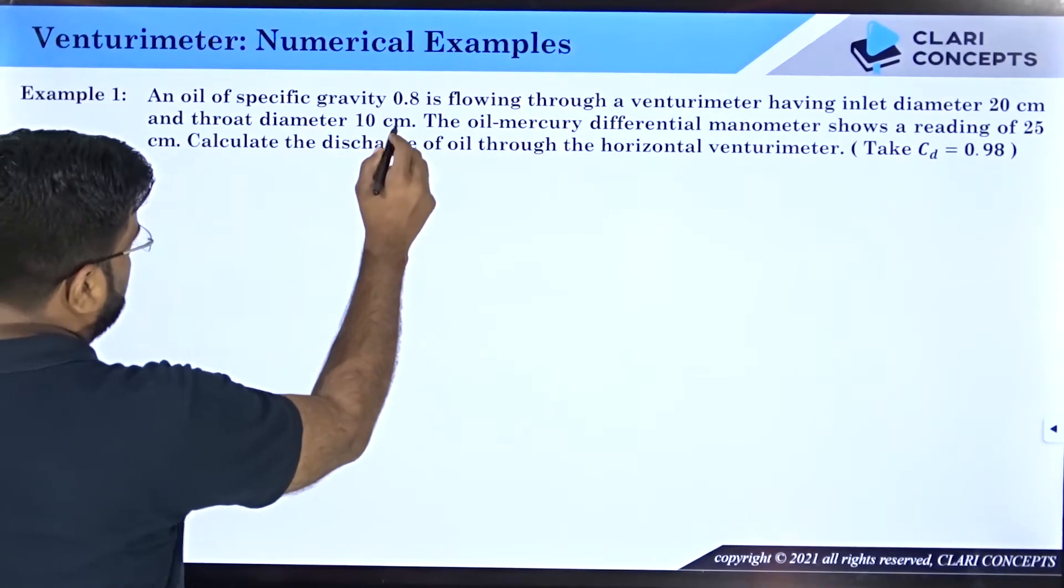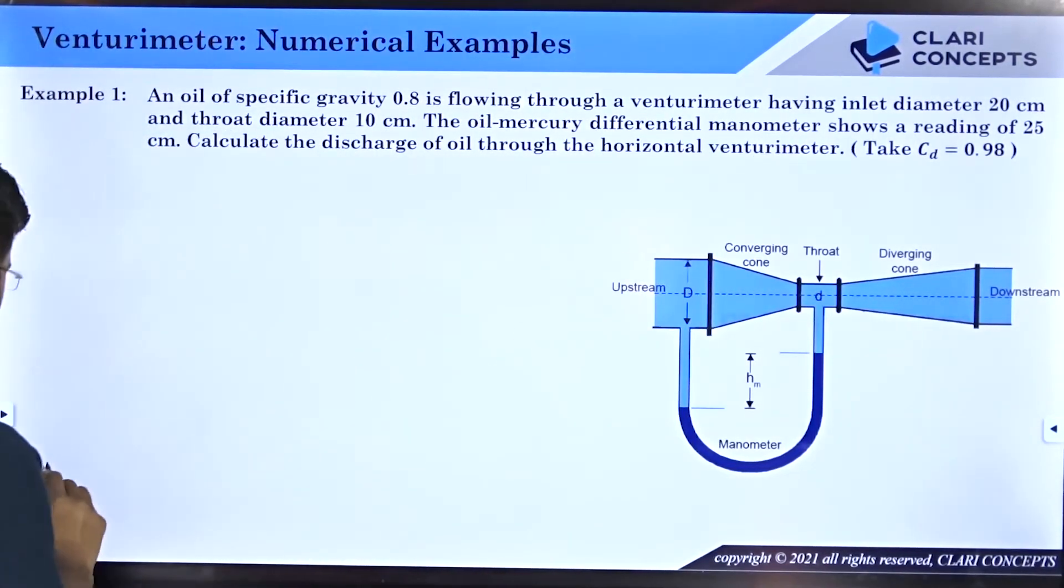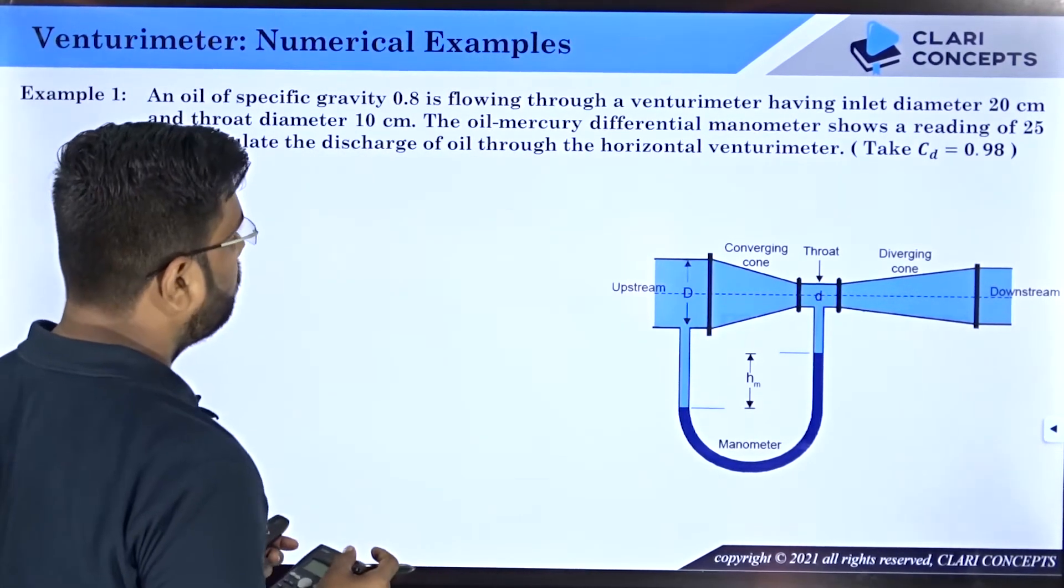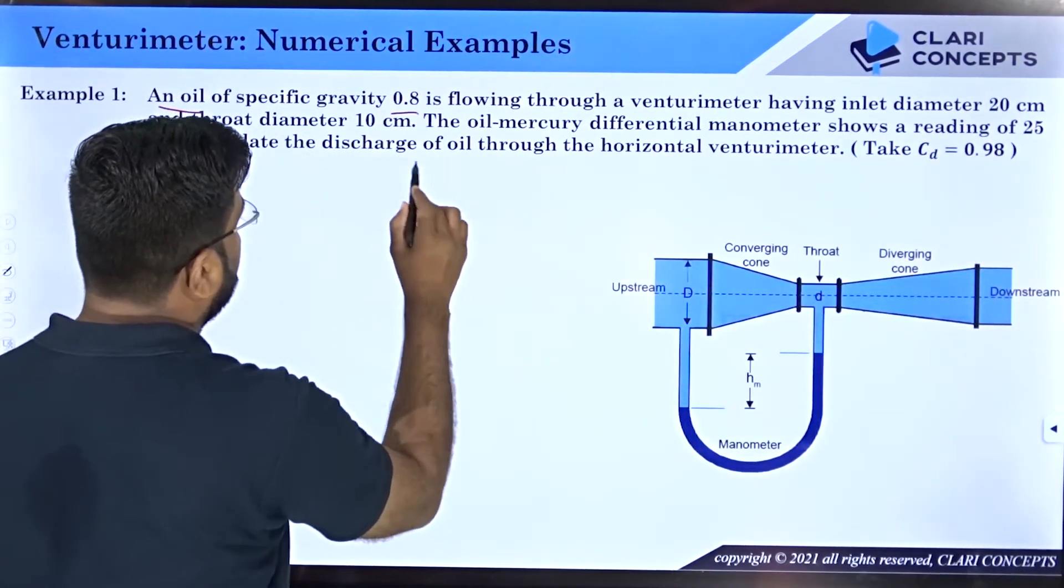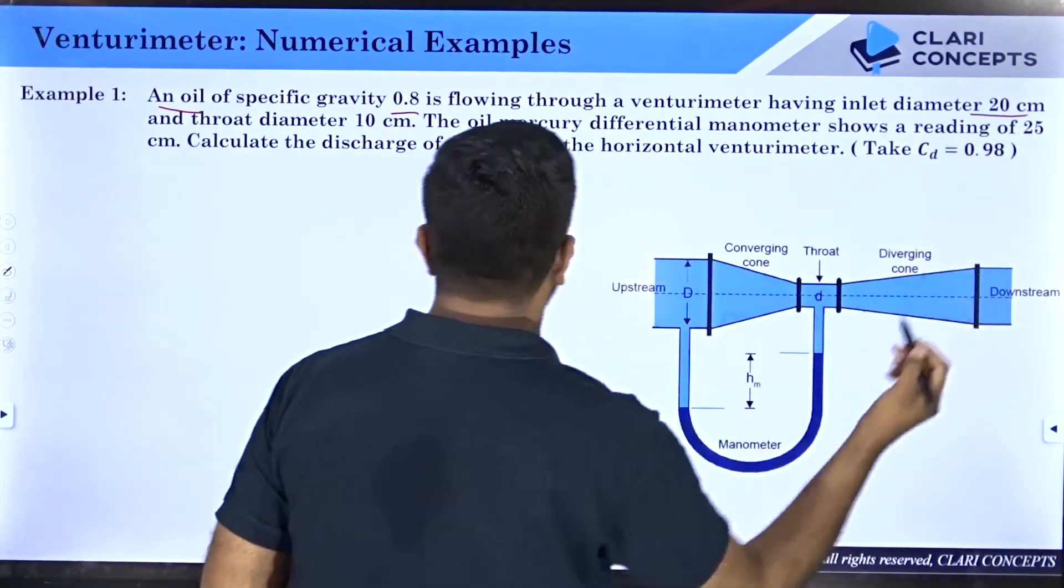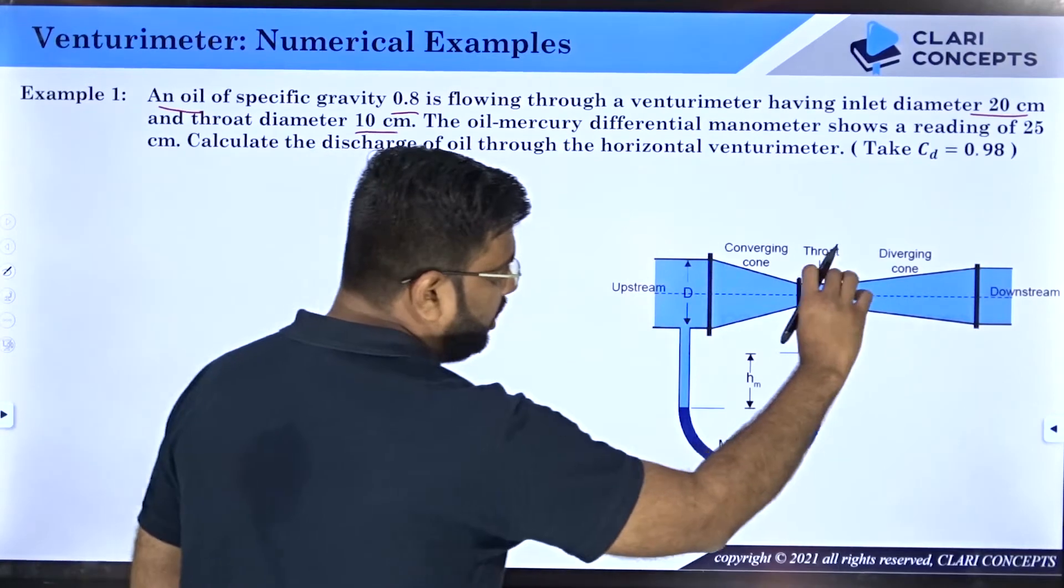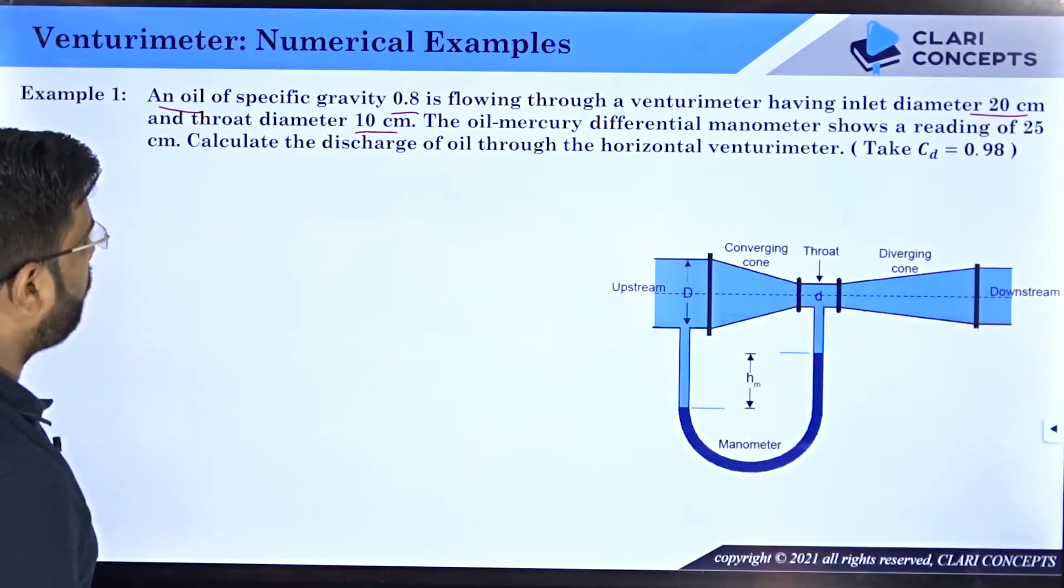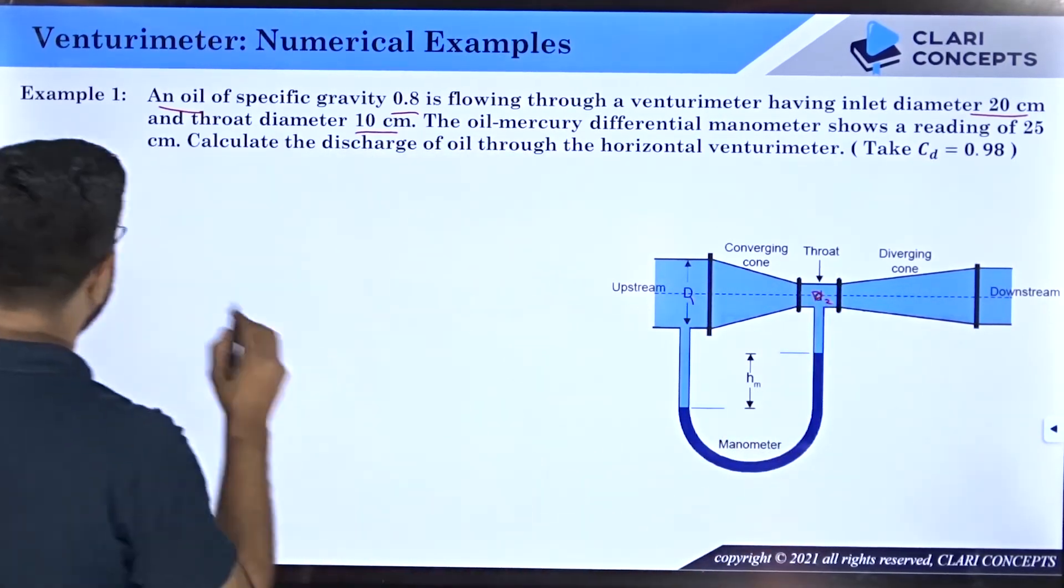Let us start with the first numerical. I have an oil of specific gravity 0.8 flowing through a venturimeter having inlet diameter 20 centimeters and throat diameter 10 centimeters. So I have a venturimeter with throat diameter 10 centimeters and inlet 20 centimeters. I will label this d1 and d2.